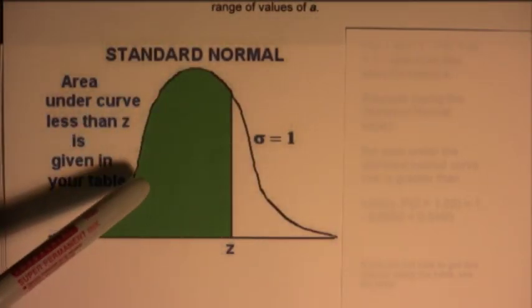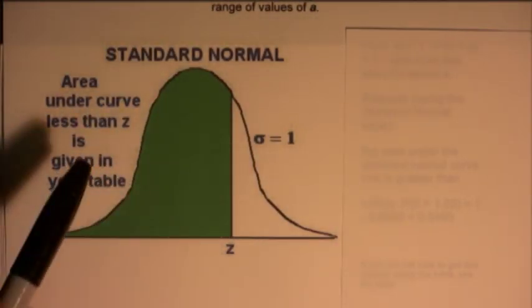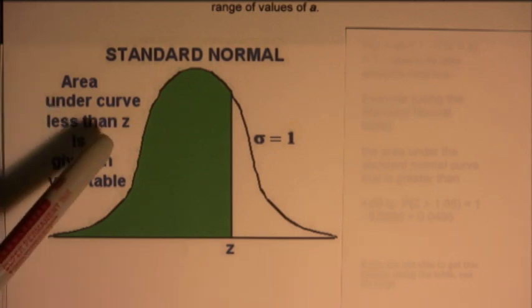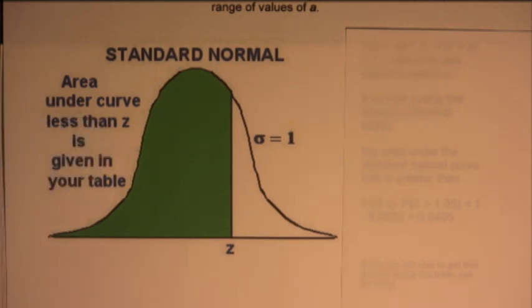Curve can be used to calculate probabilities for the standard normal random variable z, that is the normal with mean 0 and standard deviation 1.